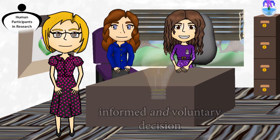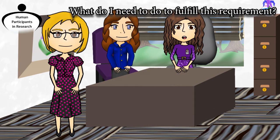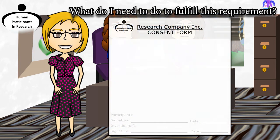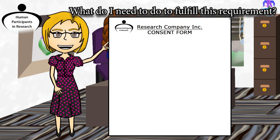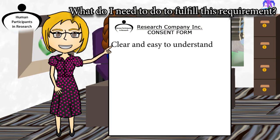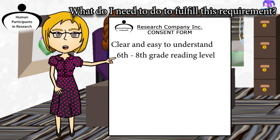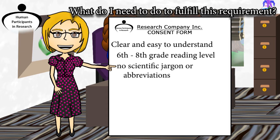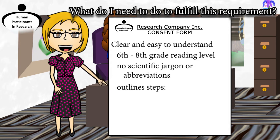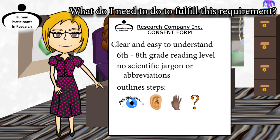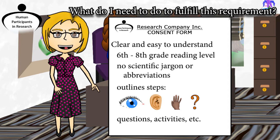You might be wondering: what do I need to do as an investigator to fulfill this requirement? The first step is drafting the consent form. The consent form needs to include language that is clear and easy to understand, meaning a 6th to 8th grade reading level is recommended. There cannot be any scientific jargon or abbreviations. It outlines the entire study step by step, describes what the participant will see, hear, feel, and otherwise experience, and includes the type of questions they will be asked, activities they will engage in, etc.